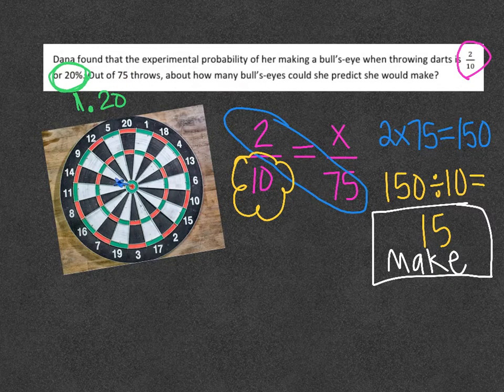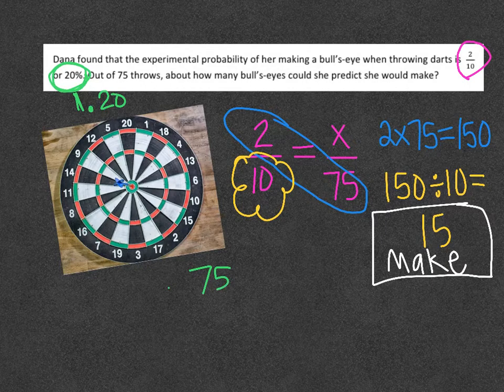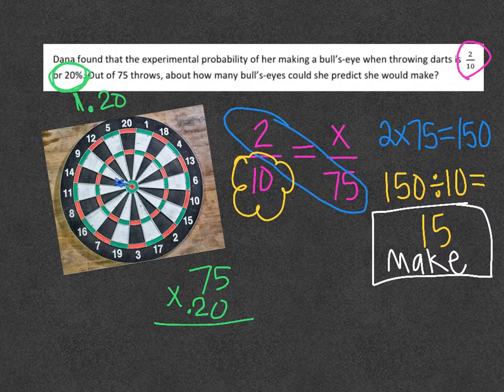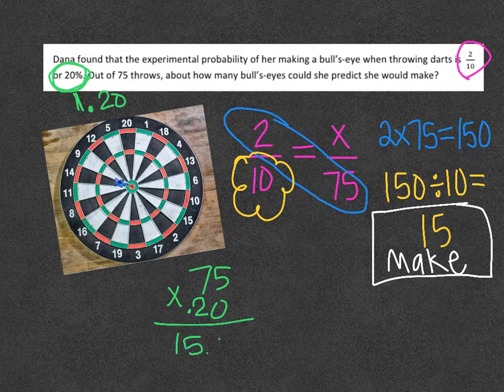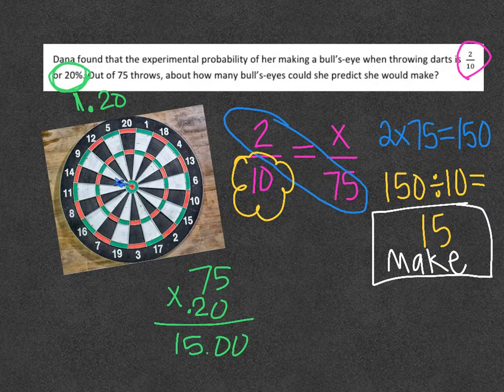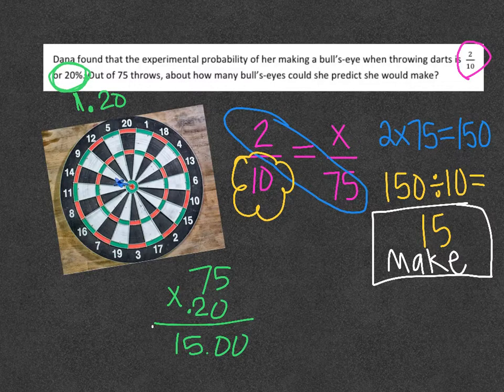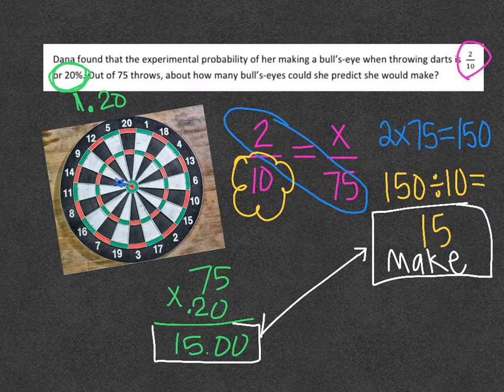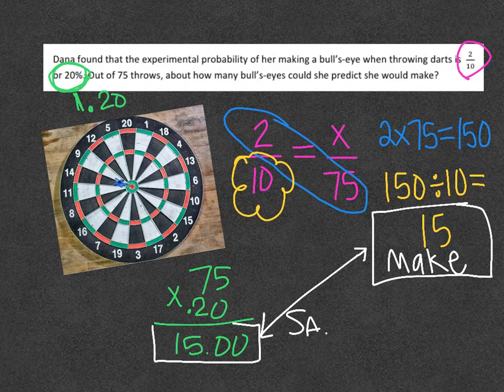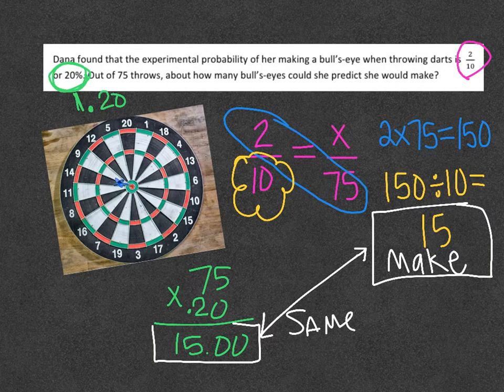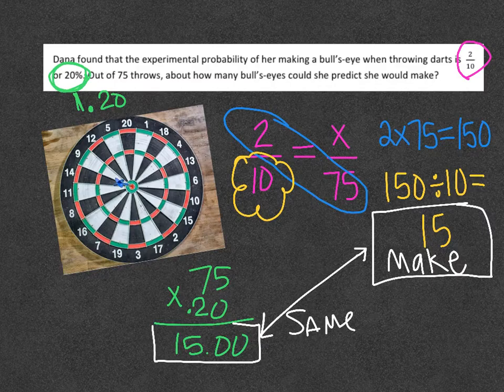But I'm just going to show you. 75 times .20. When you work it out, it's going to be 15.00. And these two, they end up being the same thing. Either way you do it, you get the same answer. She would make 15 bullseyes.